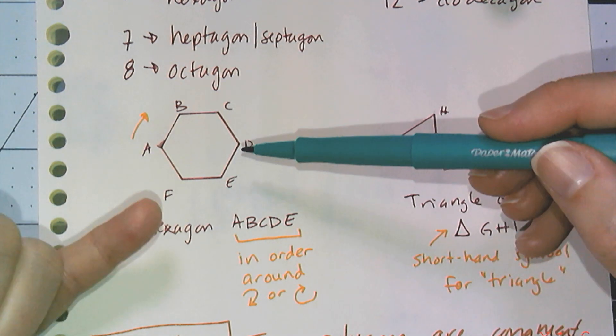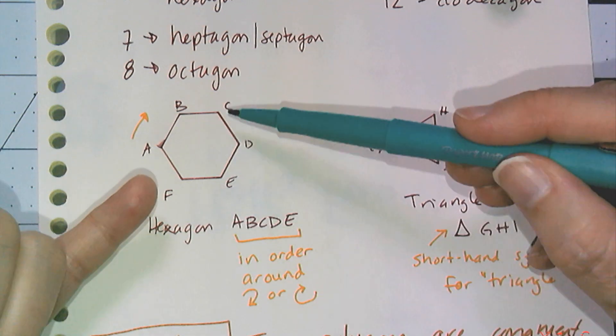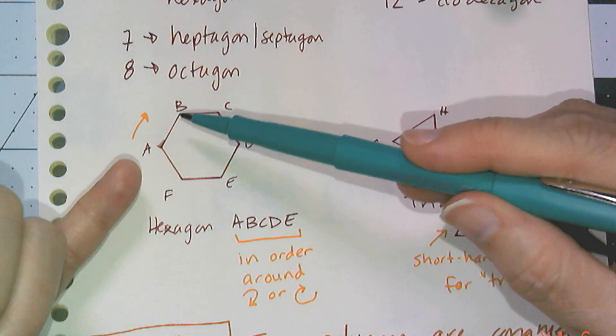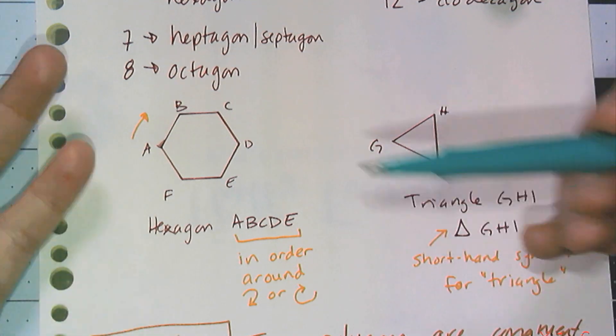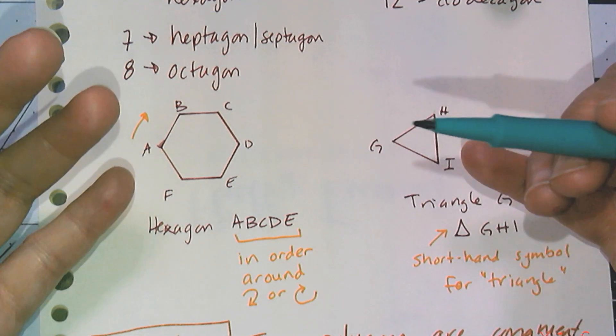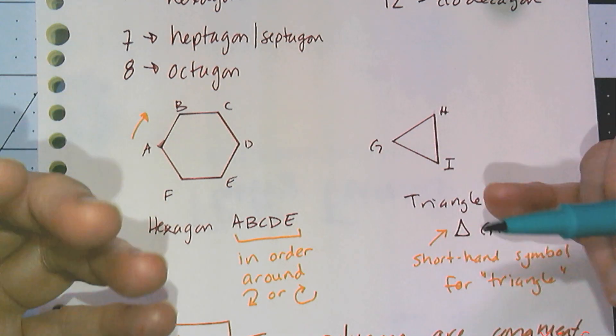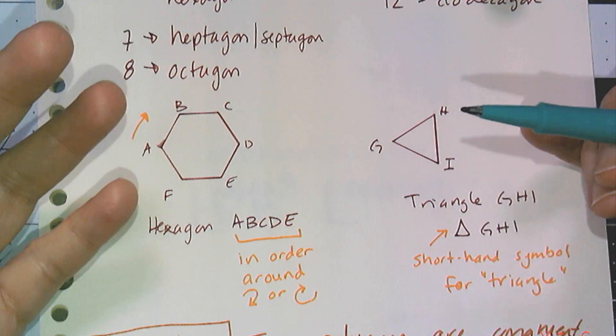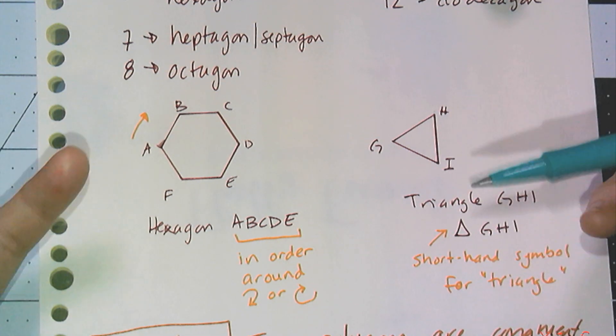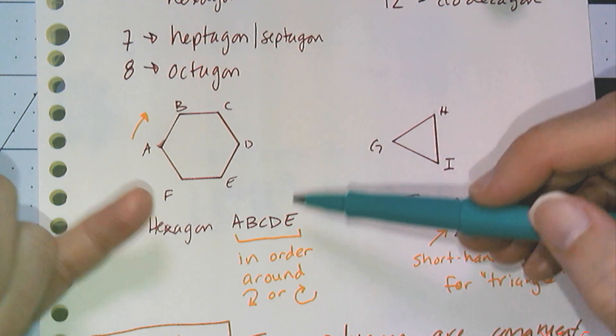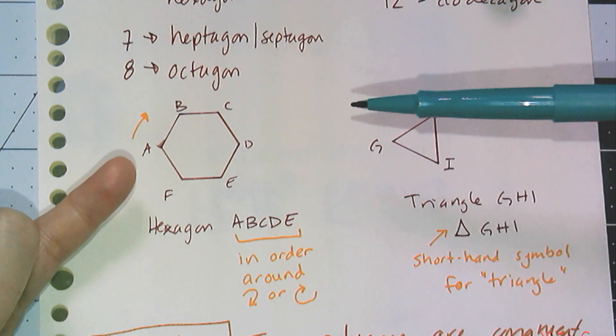You just have to pick a vertex, go around, make sure you're listing them so that they're adjacent to each other. Because that's the naming convention. When I give someone the name of the polygon, they have to be able to draw it and label it. So the convention is to pick a vertex and then go around the polygon, vertex by vertex.